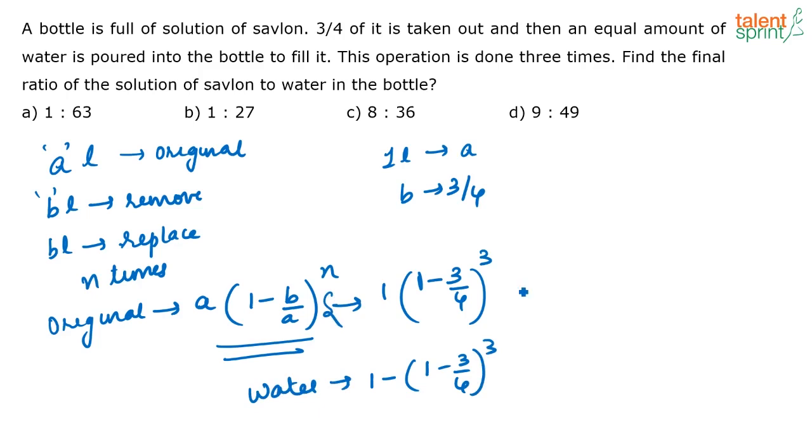So just solve for this and get the answer. This is (4 minus 3)/4 whole cube, that is (1/4) whole cube, or I can say this is 1/64. Now here it is 1 minus 1/64, that is (64 minus 1), that is 63/64.